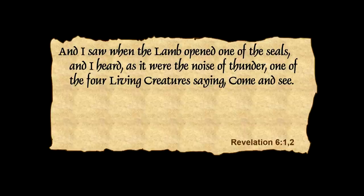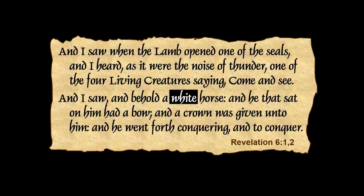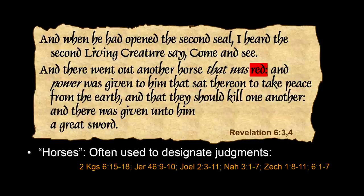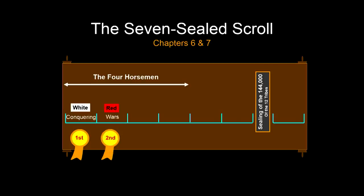When the Lamb opened one of the seals, I heard the noise of thunder and one of the four living creatures saying come and see. A white horse — he that sat on him had a bow, a crown was given unto him, and he went forth conquering. I regard that as the most important case of mistaken identity in the Bible. Then we see a red horse, which speaks of wars and rumors of wars — power was given to him to take peace from the earth. Then we get the third — the black horse — our primary focus.